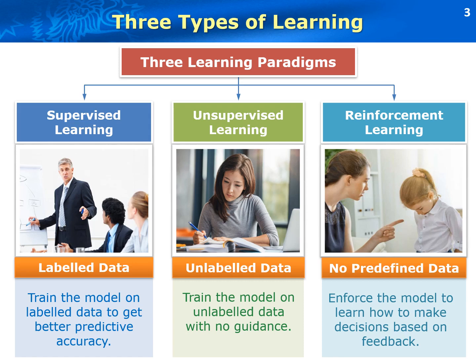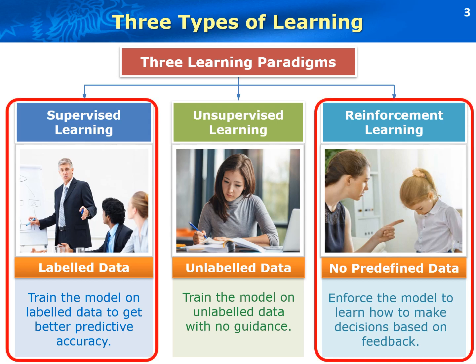The feedback includes reward or punishment. It is important to notice the difference between supervised learning and reinforcement learning. Supervised learning is taught by historical example, and reinforcement learning is taught by experience. In supervised learning, there is no feedback, but in reinforcement learning, we will get a reward or punishment as feedback from the environment.